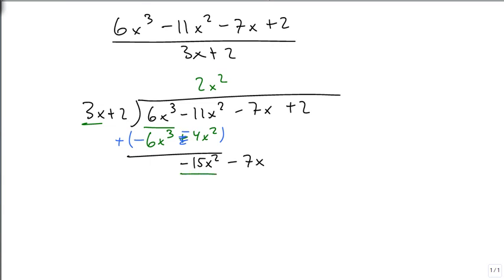3x goes into minus 15x squared minus 5x times. Notice I'm lining up my x's on the columns. So this gives me negative 15x squared minus 10x, which we then subtract. So we change all the signs. This gives us a 0x squared. A 3x, and we bring down the 2.